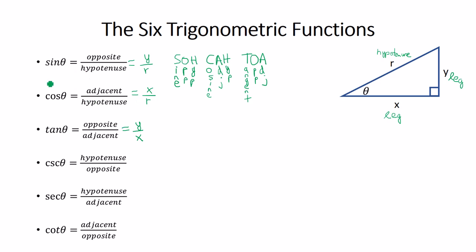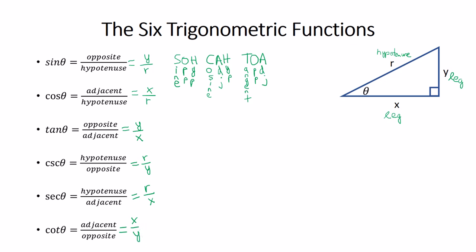If you know the first three trig functions, it might be a little easier to learn the last three. Cosecant and sine are reciprocals of each other — they are flipped versions. If sine is opposite over hypotenuse, then cosecant is hypotenuse over opposite, so R over Y. Secant is the reciprocal of cosine — cosine is adjacent over hypotenuse, so secant is hypotenuse over adjacent, R over X. Cotangent is the reciprocal of tangent — tangent is opposite over adjacent, so cotangent is adjacent over opposite, X over Y.